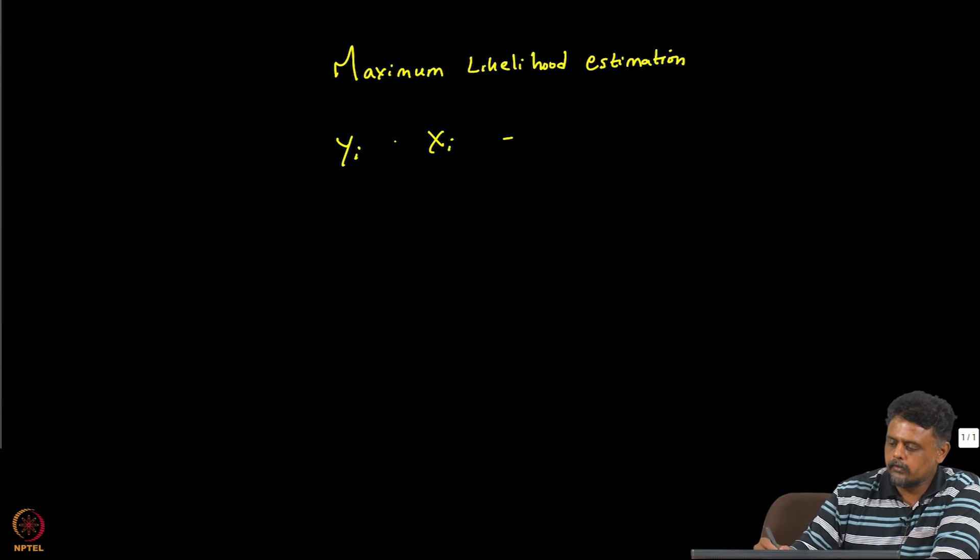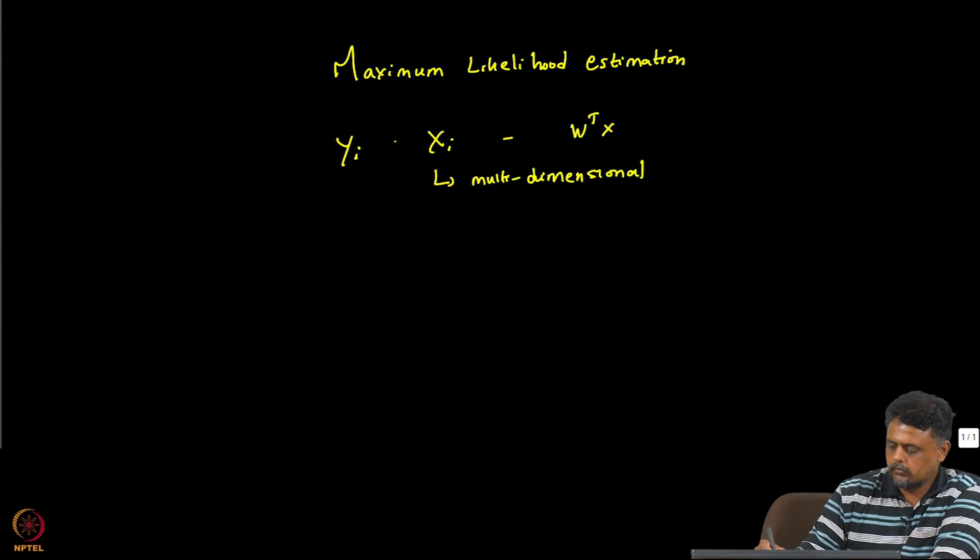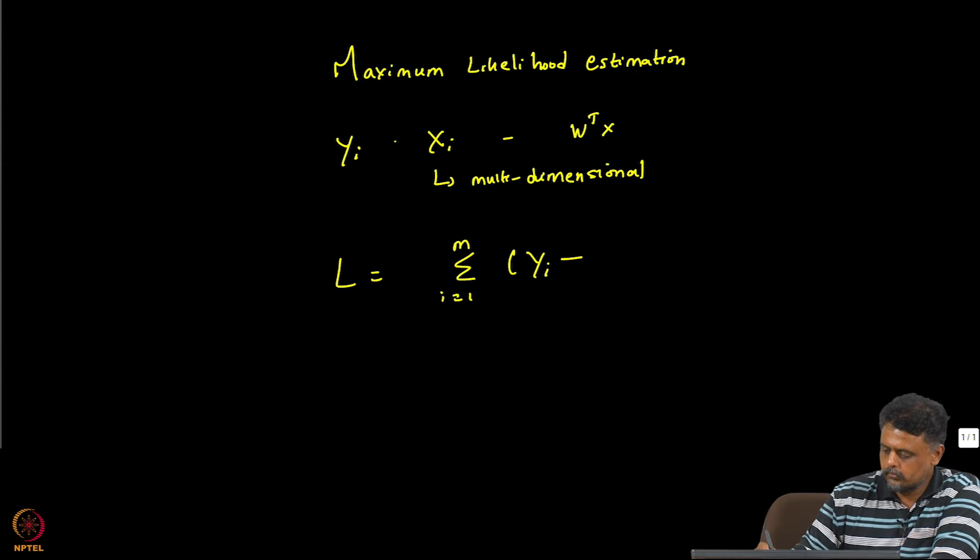So typically we formulate this model W transpose X. Again, xi can be multidimensional or just be single variable but that does not matter in this case. So our model what we try to fit typically is when you look at linear regression we looked at the least squares loss function.